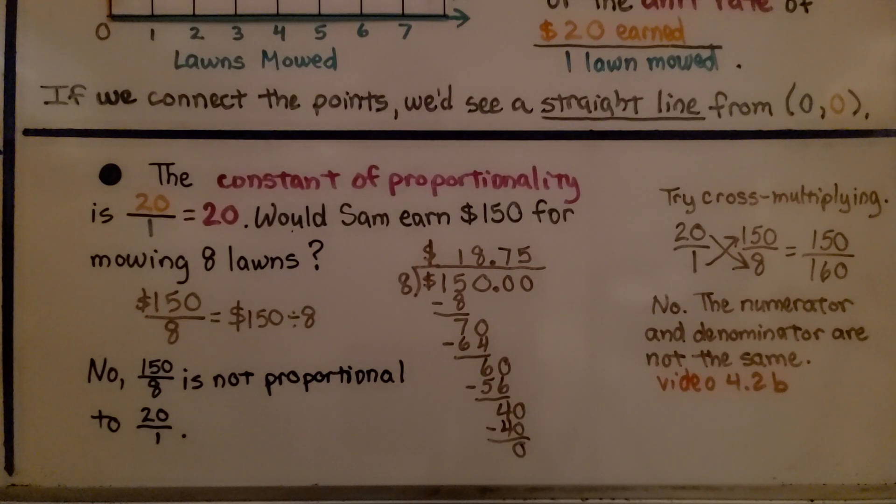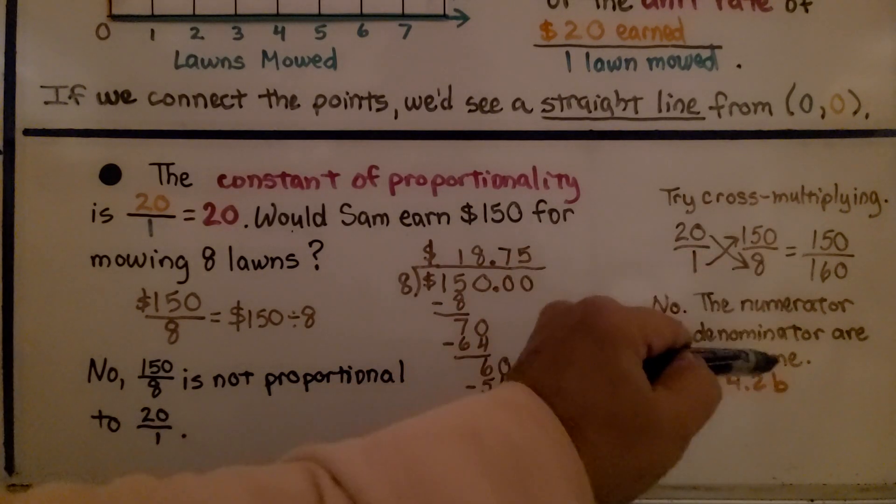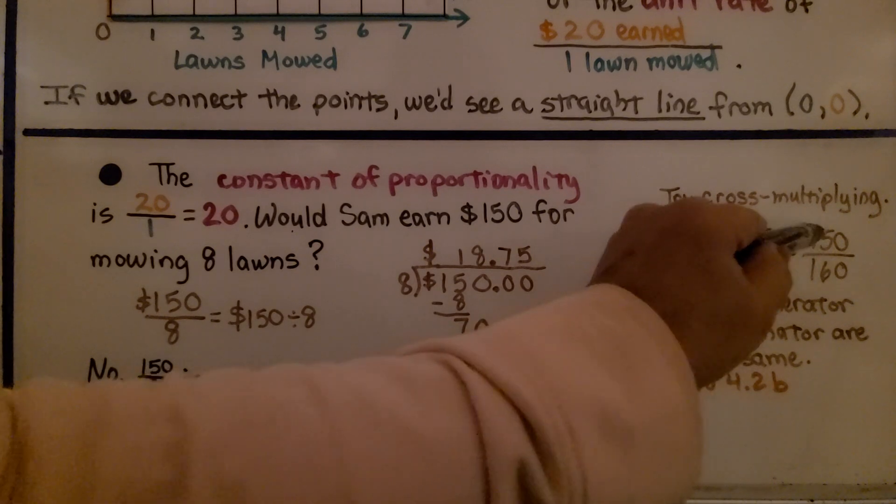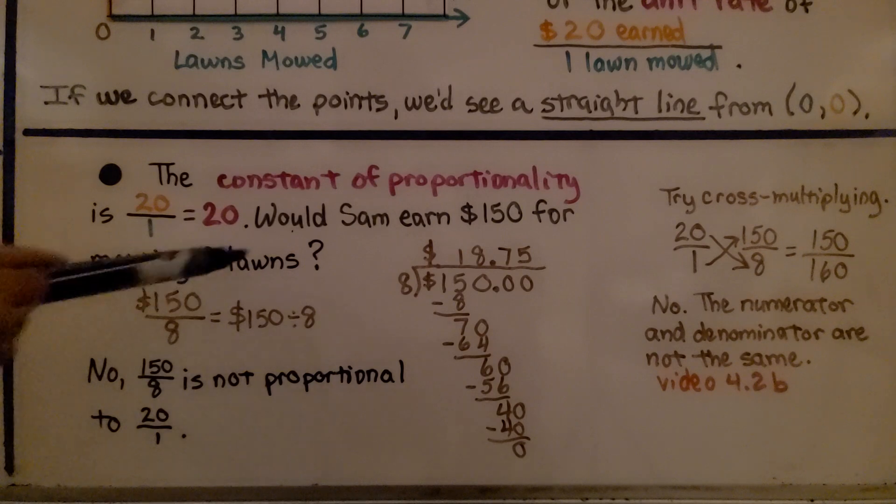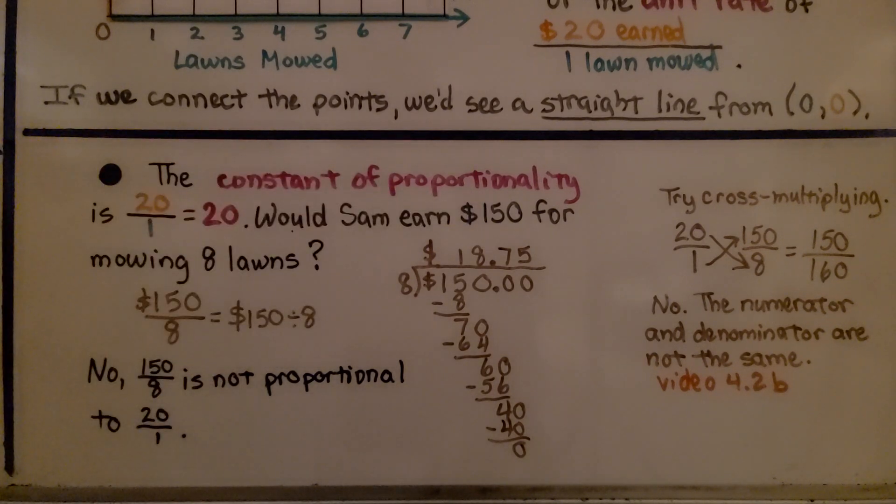We learned that in video 4.2b. If you missed it, it's linked in the description. If it were proportional, they would have the same numerator and denominator, which would simplify to 1. So no, this is not proportional. He would not make $150 for mowing 8 lawns. He would make $160.